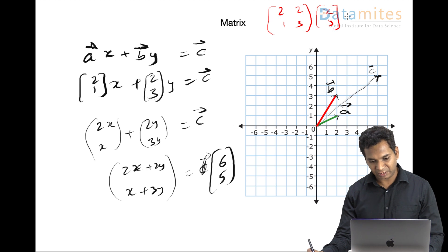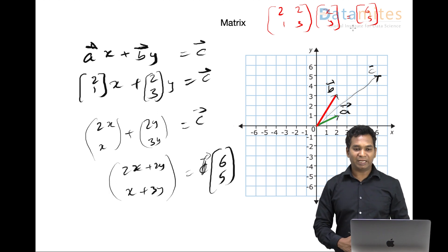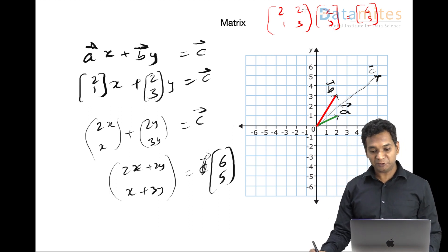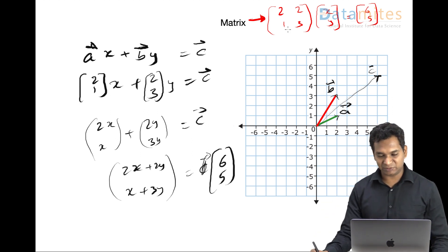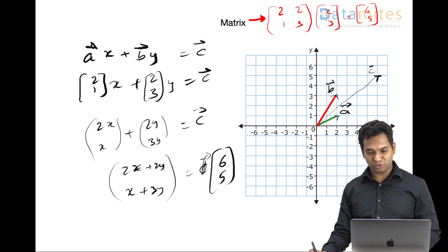That is equal to (6, 5). And if you do a matrix multiplication, this is actually called as a matrix.